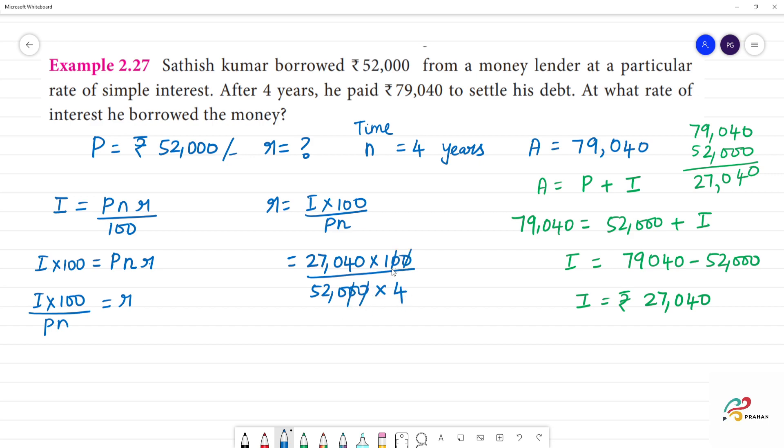This 0, this 0 cancel. Now, 27,040 divided by 4. We will write that 6 fours are 24, 7 fours are 28, divided by 2. So now we have 676.